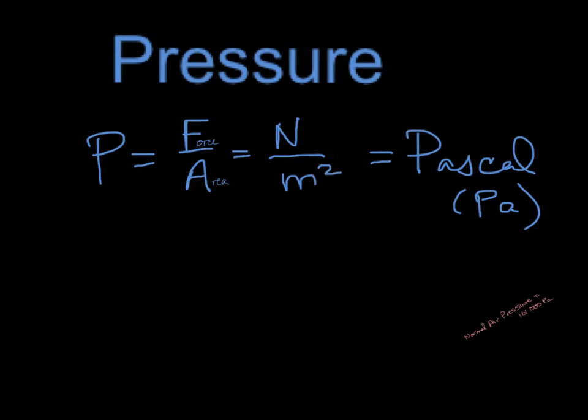Okay, but we don't use a newton per meter squared. We rename it a pascal, just like we renamed the kilogram meter per second a newton. So we rename it a pascal. So pascals are really the SI unit for pressure.